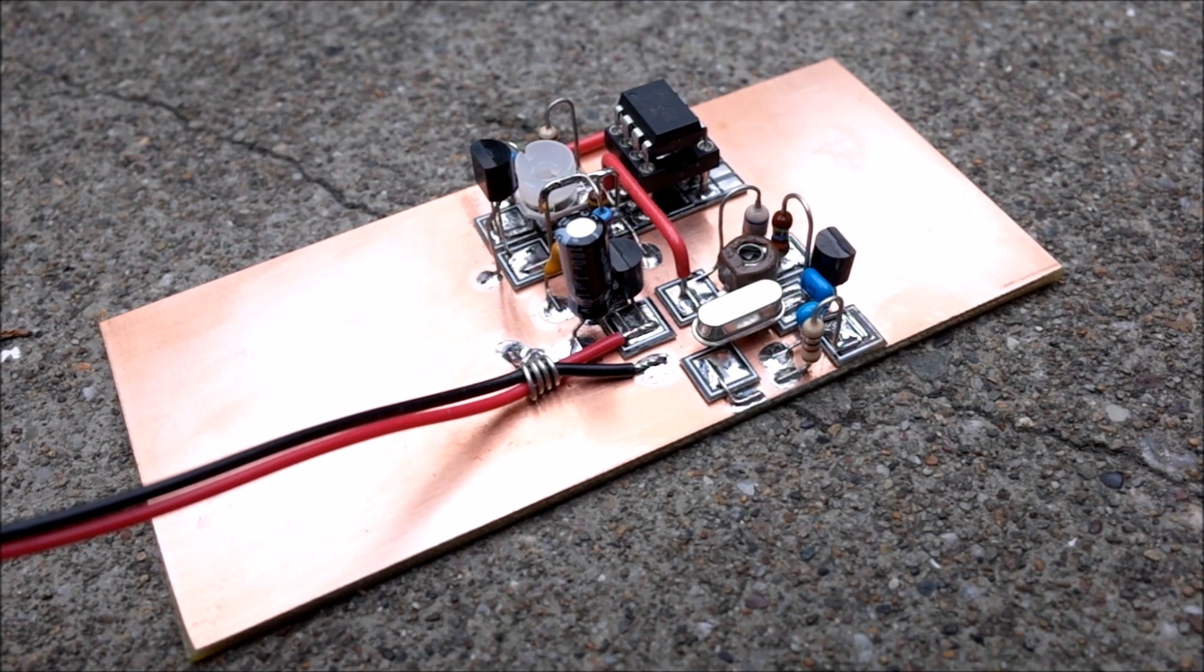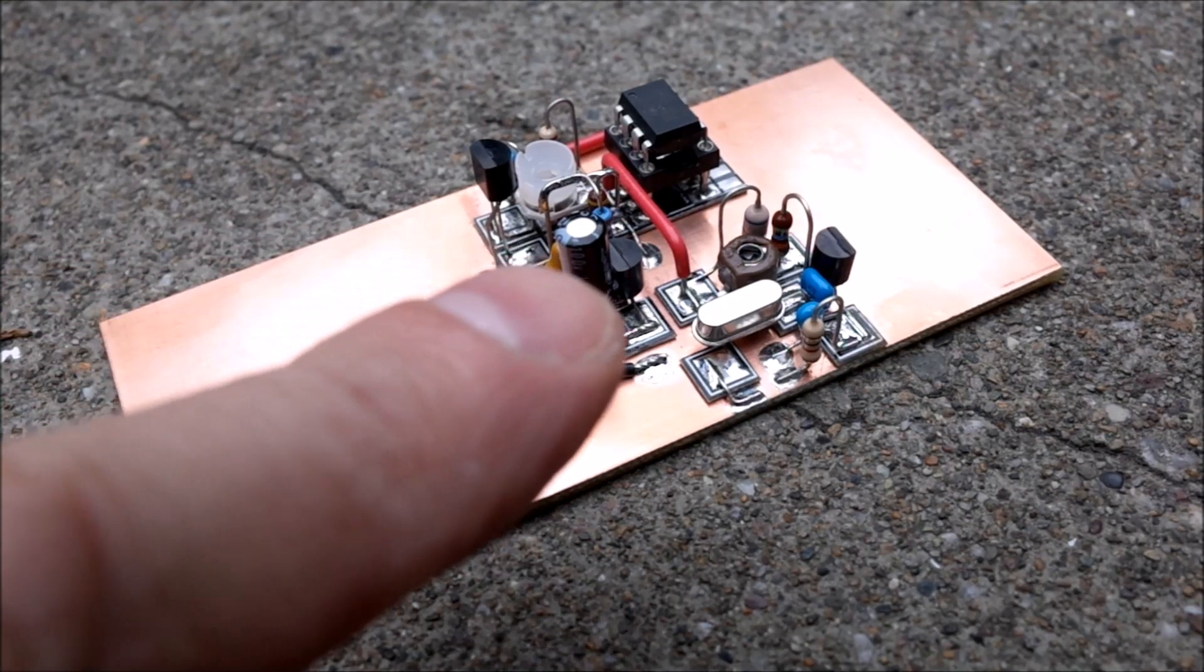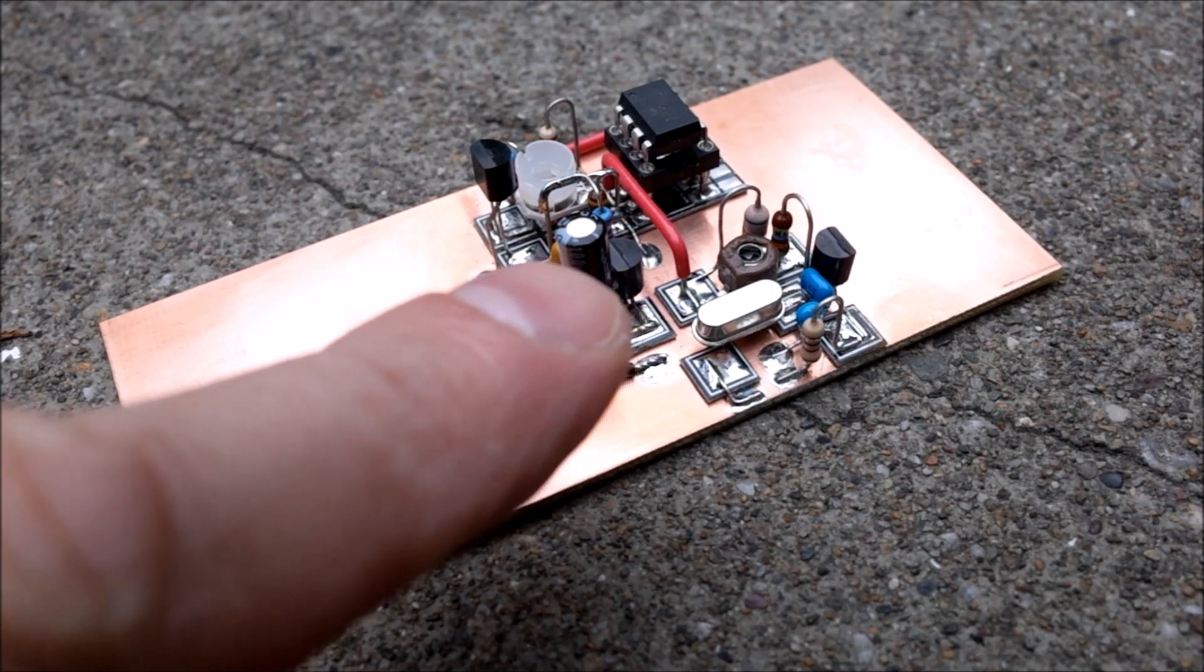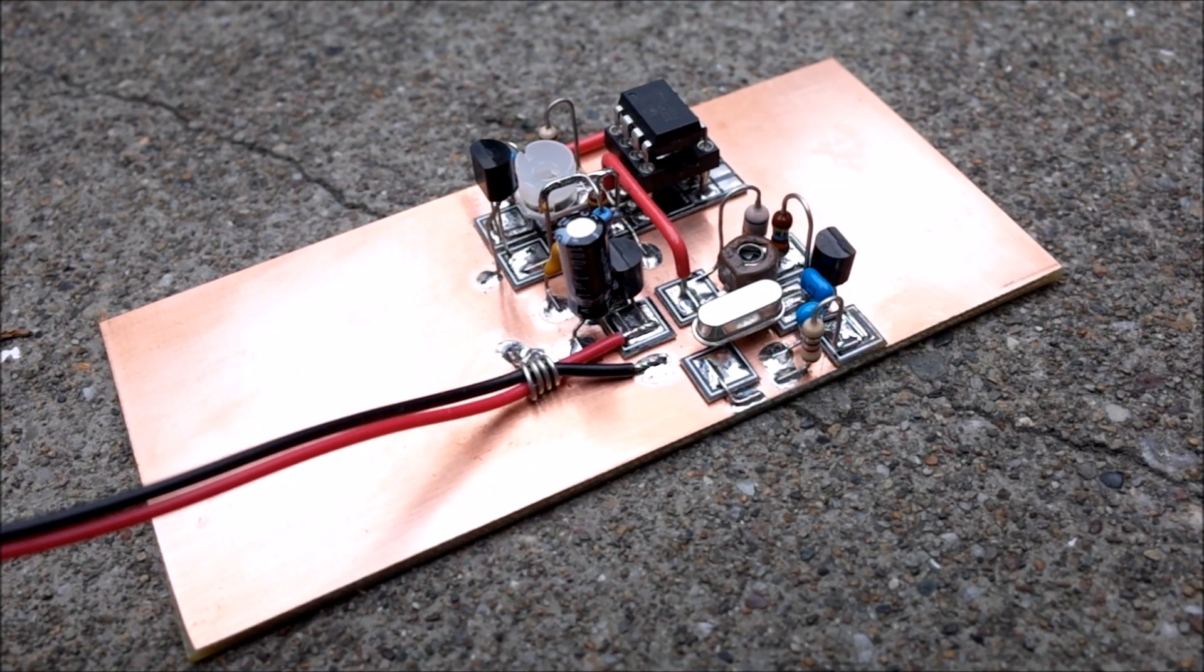The big offender in the current draw stakes here is this 78L05 voltage regulator, which has a quiescent current of a massive four milliamps, which really isn't much at all.